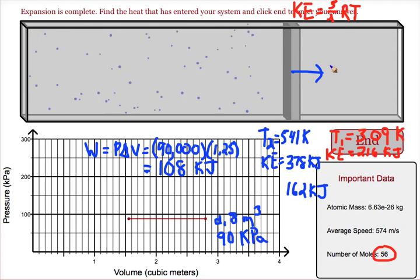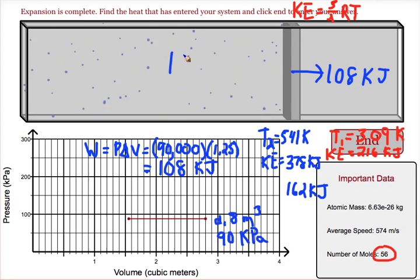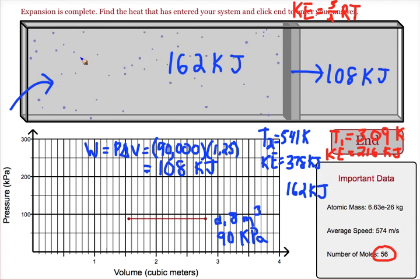So our system did 108 kilojoules worth of work. There is 162 kilojoules still inside that were not there before. So the heat that entered our system must be the sum of those two answers. That's about 270 kilojoules.